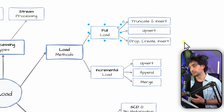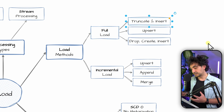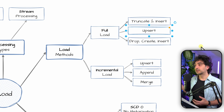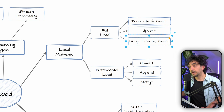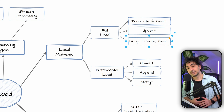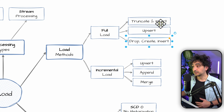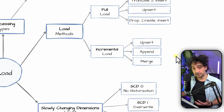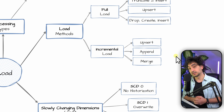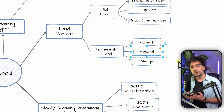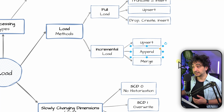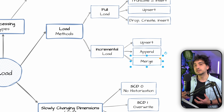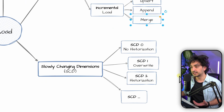For load methods, we have full load or incremental load. Full load options include: truncate and insert (empty the table then insert everything); upsert (update existing records and insert new ones); or drop, create, and insert. For incremental load, we can use upserts, append-only inserts for log-type sources, or a merge operation — similar to upsert but also including deletes — so update, insert, and delete.